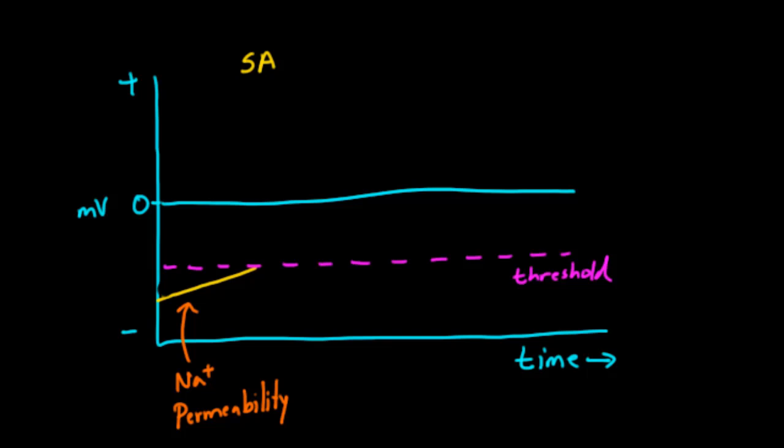That just means that the channels for calcium open up, and they open up and make the cell go positive. Eventually, the potassium channels take over, and it becomes negative again. This part right here, we think of as the action potential. This is what it looks like for the SA node.